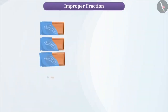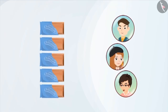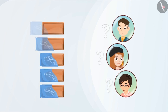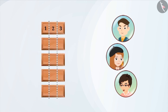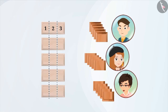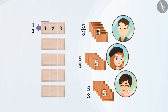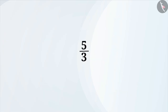Let's assume that you have five chocolates and you have to divide them equally among three people. For this, we have to divide each chocolate into three equal parts and give a part of each chocolate to each person. By doing this, each person will have five parts of 1 by 3 chocolate. Therefore, we can say that each person will get 5 by 3 chocolate. In this fraction, 5 is the numerator and 3 is the denominator.